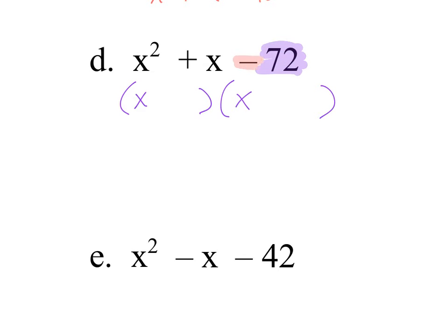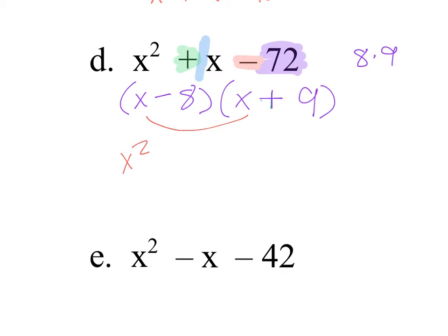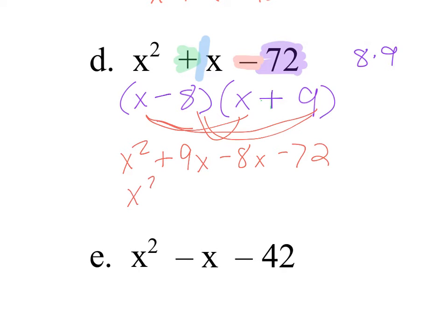For x squared plus x minus 72, factors of 72 that subtract to 1. 8 times 9 — that works. I put in 8 and 9. The first operation is plus, so my largest, 9, is positive, and my smaller 8 is negative. FOIL check: x squared plus 9x minus 8x minus 72, which gives x squared plus x minus 72. Check.